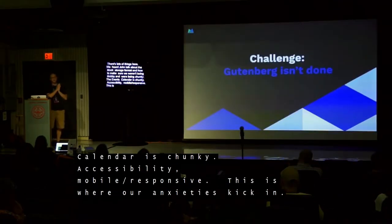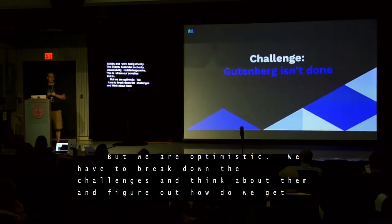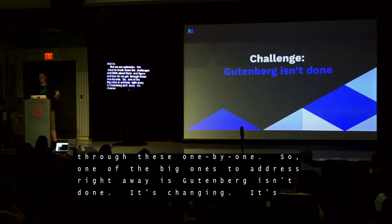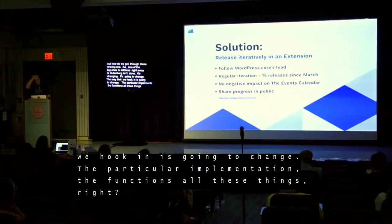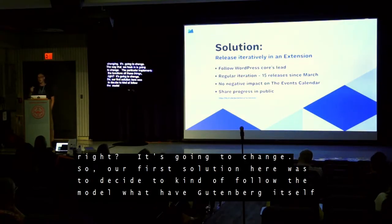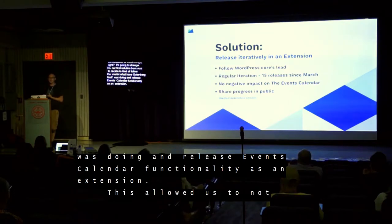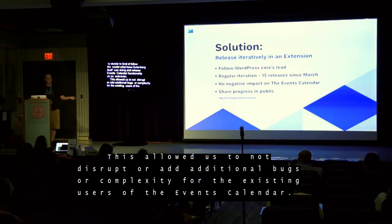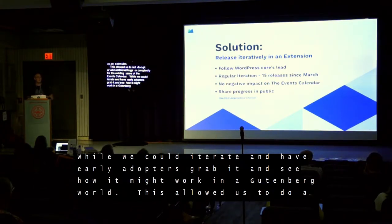But we're still optimistic. We've got to start breaking down these challenges and thinking about how we get through these one by one. One of the big ones we needed to address right away is that Gutenberg is changing — the way that we hook in is going to change. Our first solution was to follow the model of what Gutenberg itself was doing and release Events Calendar functionality as an extension. This allowed us to not disrupt or add additional bugs or complexity for the existing users of the Events Calendar while we could still iterate and have early adopters grab our extension, install it, and see how the Events Calendar might work in a new Gutenberg world.